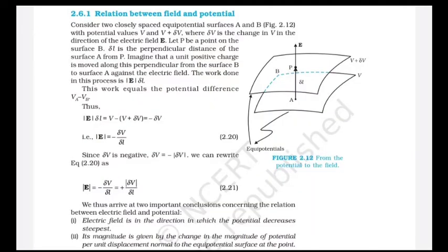To find the relation between electric field and electric potential, consider two closely spaced equipotential surfaces A and B with potential values V and V + ΔV. Surface A has potential V and surface B has potential V + ΔV, where ΔV is the change in potential in the direction of electric field E.